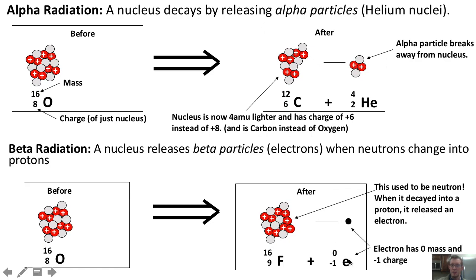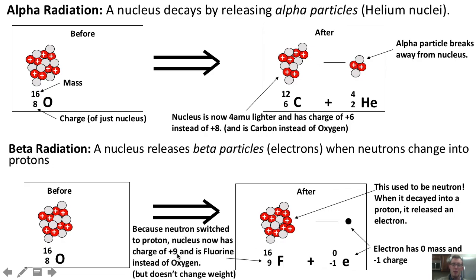You'll notice we write the electron as having a mass of zero atomic mass units and a charge of negative one. And because the neutron switched to a proton, our original nucleus now has a charge of positive nine instead of positive eight, and it's now fluorine, whose atomic number is nine, instead of oxygen, whose atomic number is eight.